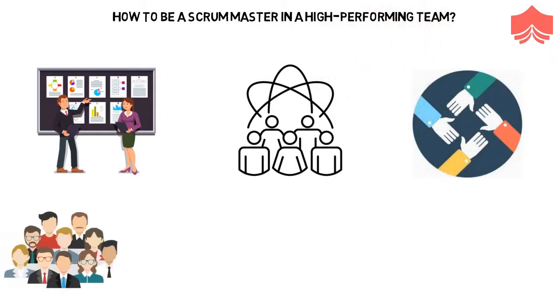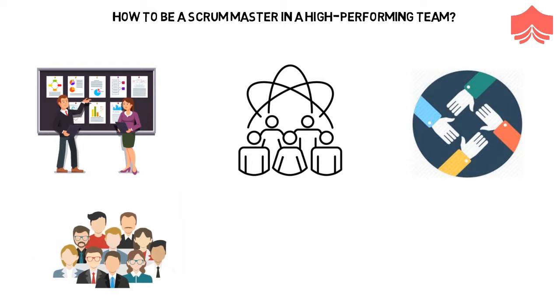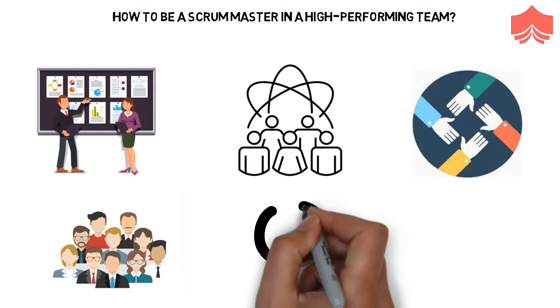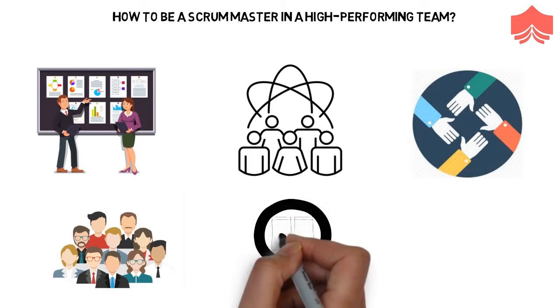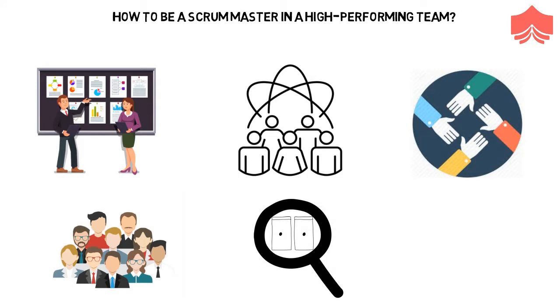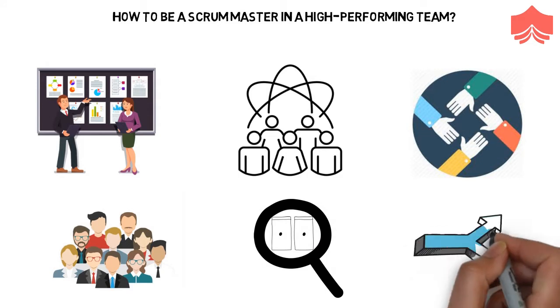No one is perfect in this world. A team may be a High-Performing Team, but there is always some scope for improvement in almost everything in this world. A team may look perfect, but the Scrum Master needs to observe it closely to open new dimensions for improvements.